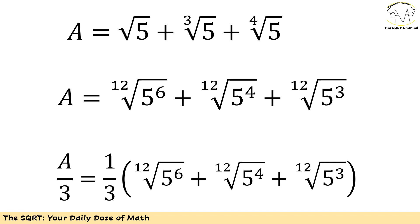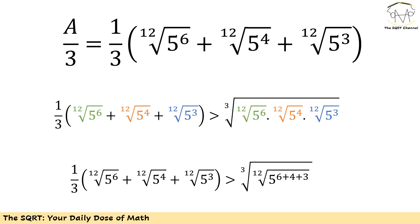Take your time to see where I'm heading with this approach — it's not difficult to understand. When we have this type of problem we use an inequality. I'm going to use the AM-GM inequality here. The terms I have are: the 12th root of 5 to the power of 6, the 12th root of 5 to the power of 4, and the 12th root of 5 to the power of 3.